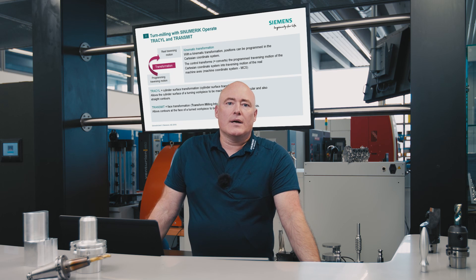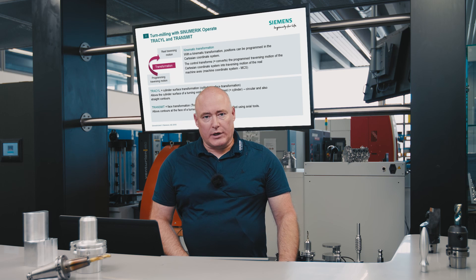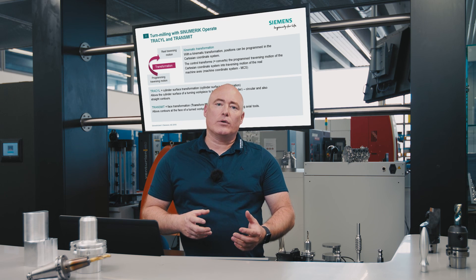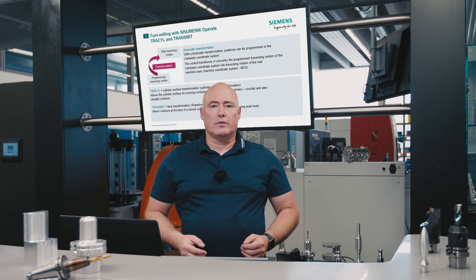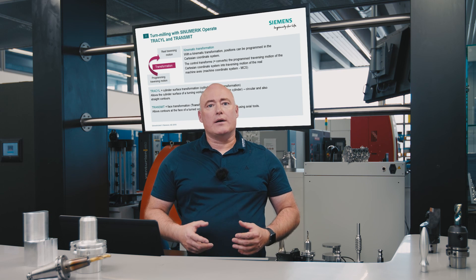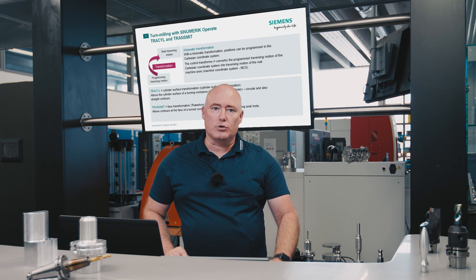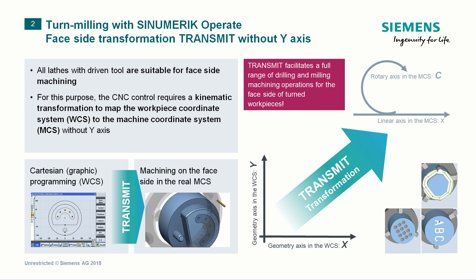We now move from the fundamentals of turn milling to the application of turn milling with CINEMERIC Operate. A programmed traversing movement must be transformed into the actual traversing movement of the CNC machine according to the kinematic preconditions. We make a distinction here between two functionalities: on the one hand, TRASIL — that's the cylinder surface transformation — and on the other hand, TRANSMIT. TRANSMIT stands for Transform Milling into Turning. To transform milling into turning without the Y axis, the CNC controller requires a kinematic transformation for mapping the coordinate systems. In summary, TRANSMIT permits the full range of drilling and milling for the front face of rotating workpieces.